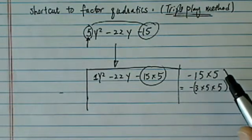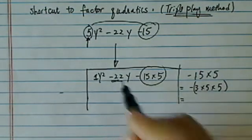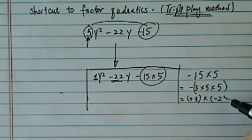Now you see here, 15 times 5 is really equal to 3 times 5 times 5. And here, since I'm looking for minus 22, I see the combination as positive 3 times minus 25.